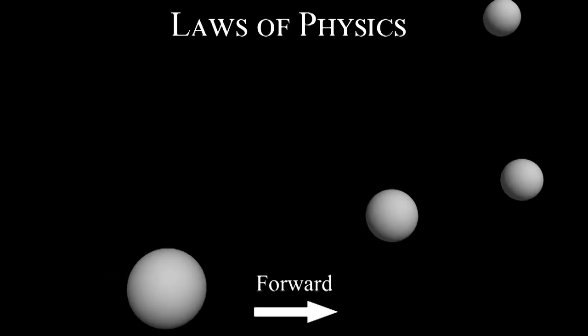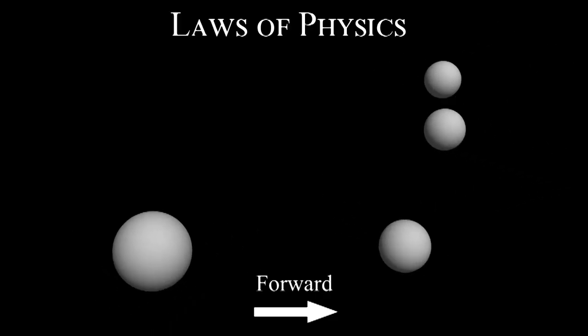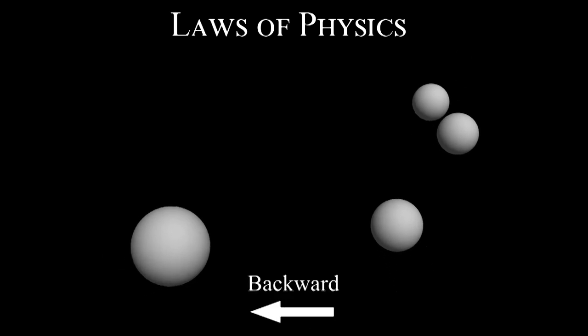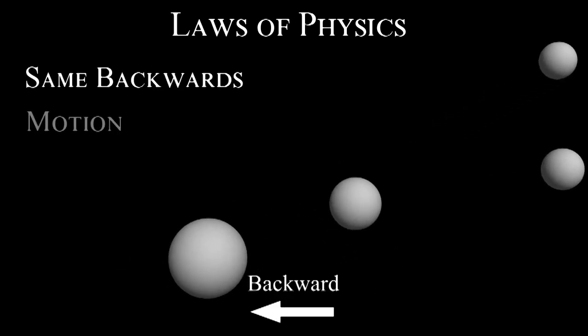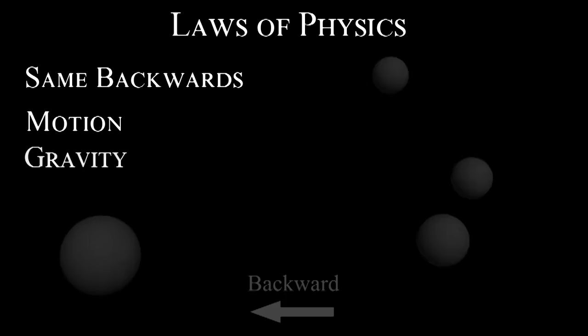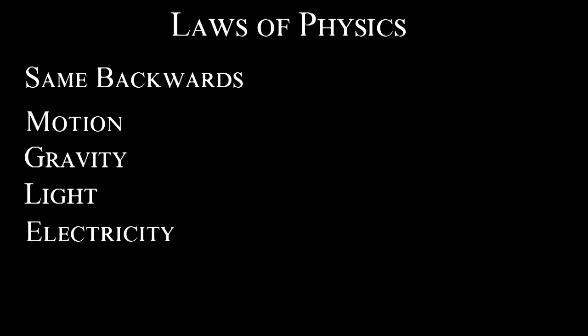You might think that the laws of physics are very different when you go backwards in time, but they're not. They're almost all exactly the same. The laws of motion are the same. Gravity's the same. Light's the same. Electricity is the same. Quantum mechanics is the same. They're all the same going backwards in time.